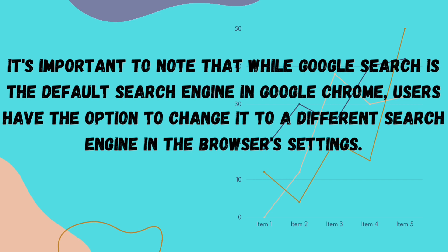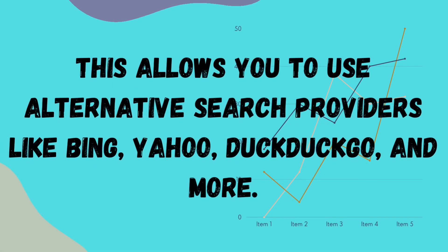It is important to note that while Google Search is the default search engine in Google Chrome, users have the option to change it to a different search engine in the browser settings. This allows you to use alternative search providers like Bing, Yahoo, DuckDuckGo, and more.